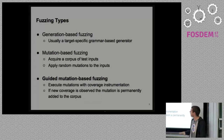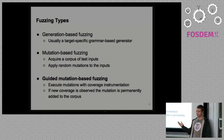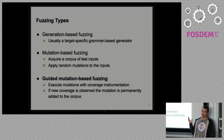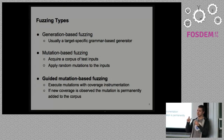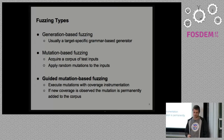Speaking about fuzzing approaches, we can split them into three types. The first one is generation-based, where you write a generator to generate data for your fuzzer. For example, you write an HTML page generator — you take all names of HTML tags, generate some text based on these elements, then try to open the page generated by your generator with a browser, and sometimes you will find unexpected behavior.